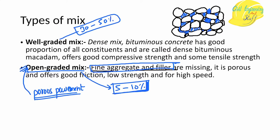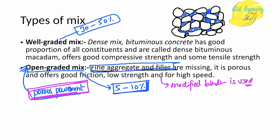Because of the absence of fine aggregate, the load-taking property of open graded mix is inferior compared to well graded mix. These mixes are used for extremely low volume roads, porous pavements, parking areas, footpaths, or dividers subjected to very light vehicles. To improve the adhesive and durability properties of open graded mix, modified binders are used.